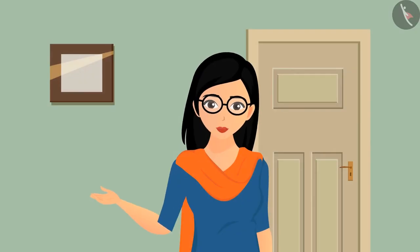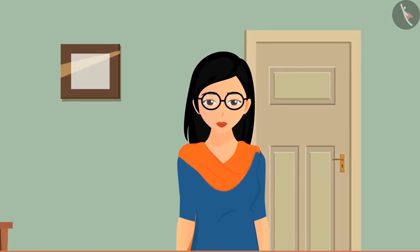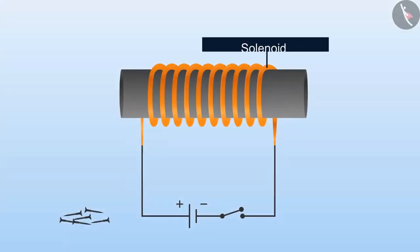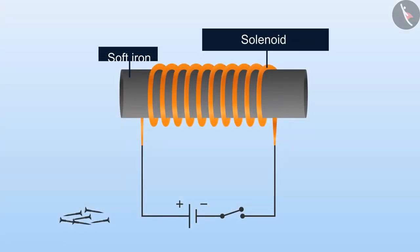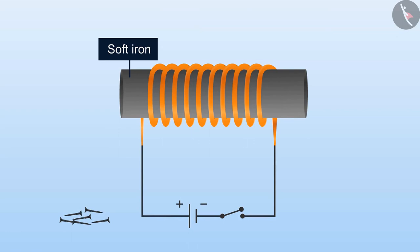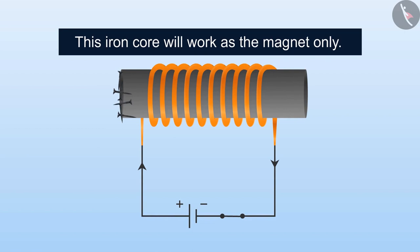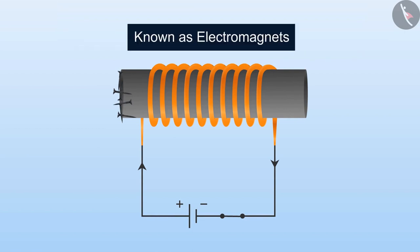So, can we make a magnet with the help of a solenoid? Yes, this is possible. If we put a soft iron core in the solenoid and turn on the electricity, then this iron core will work as a magnet. The magnets formed with the help of electricity are known as electromagnets.